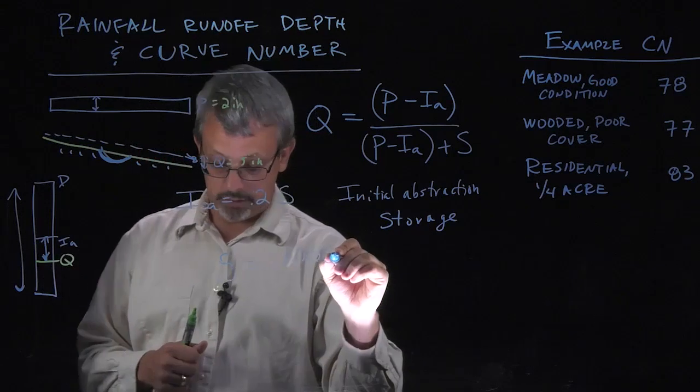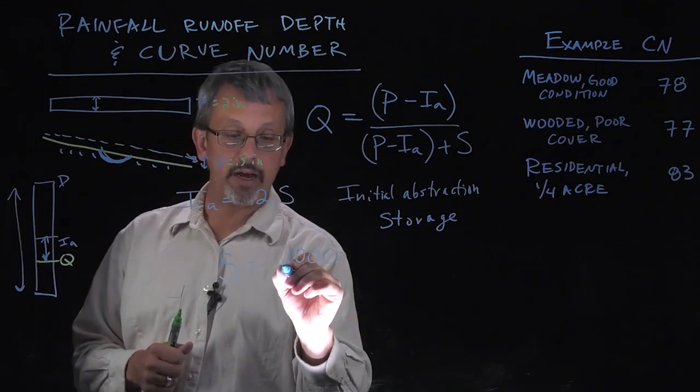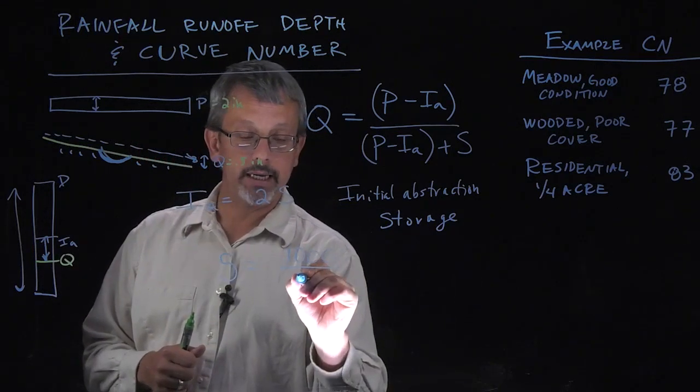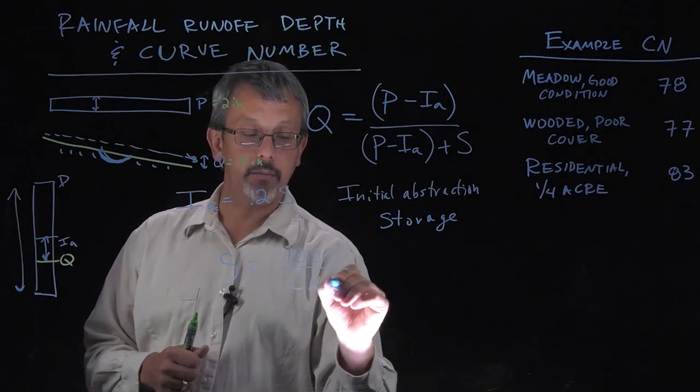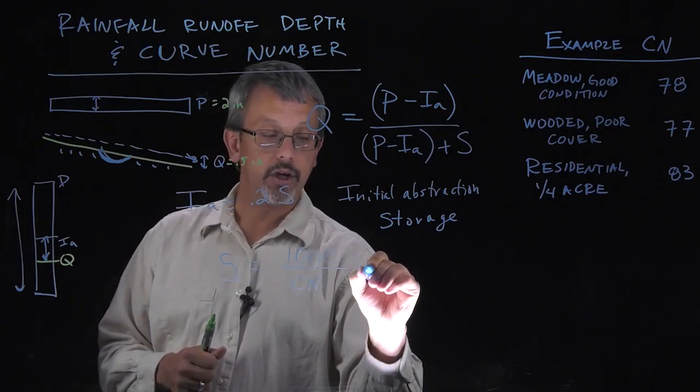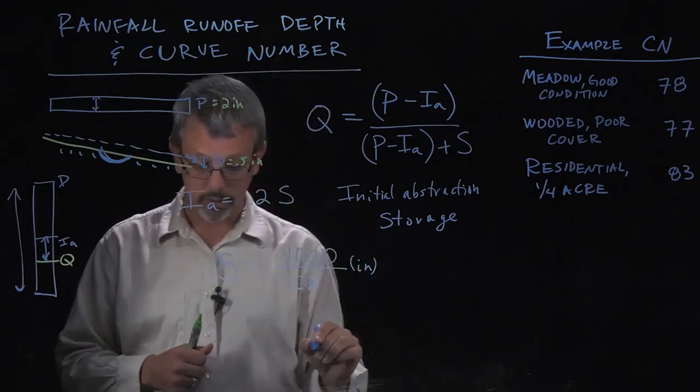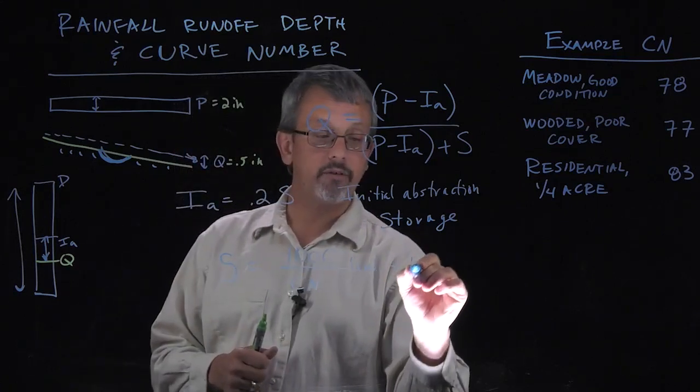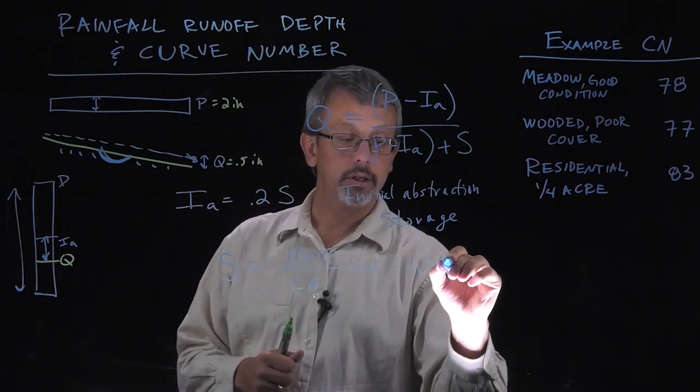That storage follows a formula that looks something like this. We assume a storage of a thousand divided by something called a curve number, in units of inches, and then we subtract off a value of 10 inches.